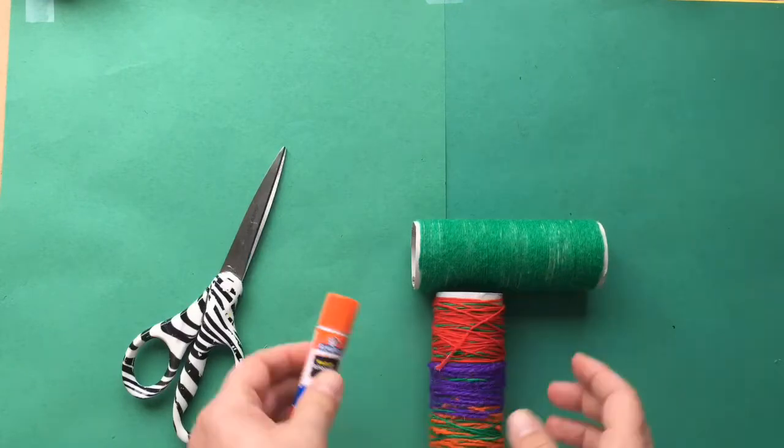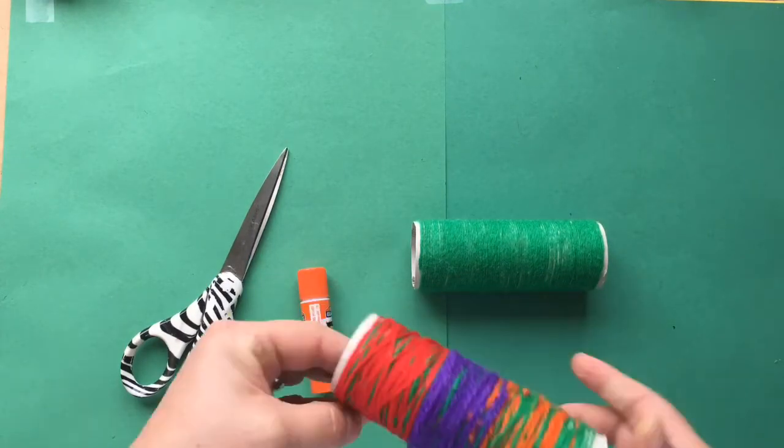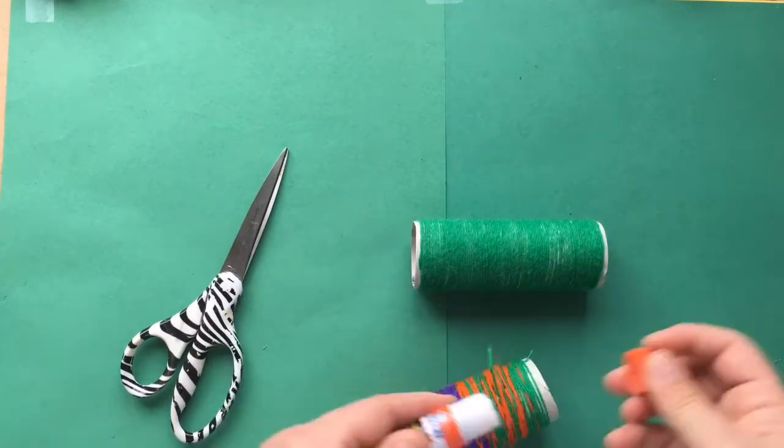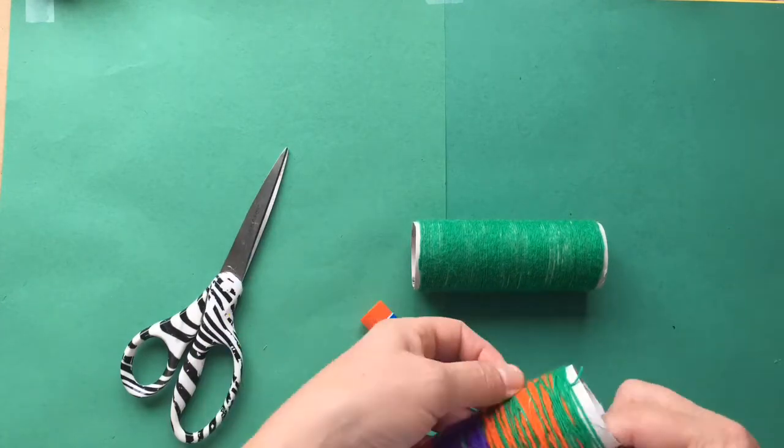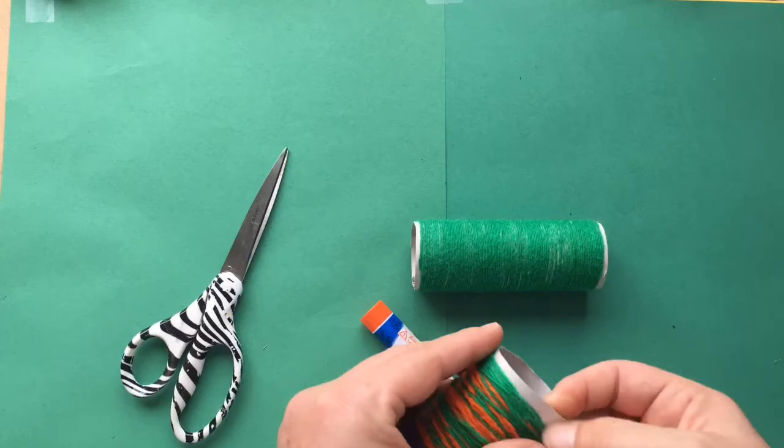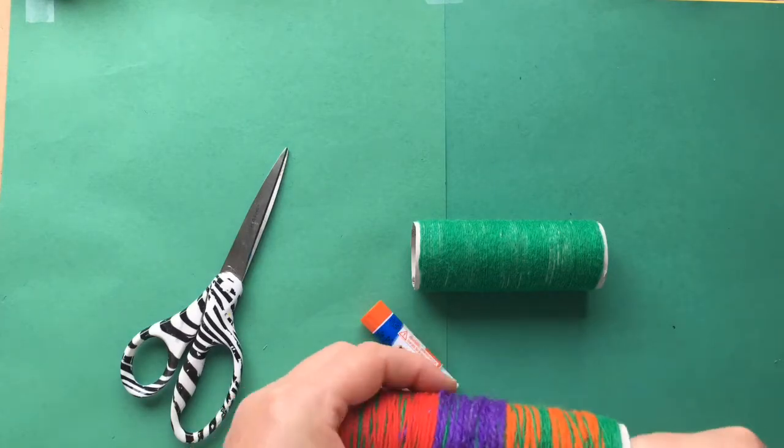If you have a couple loose strings, you can add some glue stick to it and just hold it down, or you can trim them up and make it all clean before you do the next step.